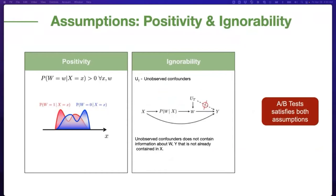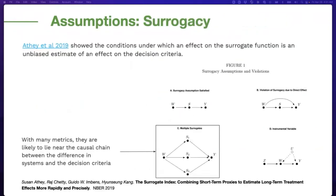The first two assumptions are positivity and ignorability. The positivity assumption states that the user must have a nonzero probability of being assigned to treatment. The ignorability assumption states that unobserved confounders do not contain information about the treatment W and outcome Y that is not already contained in X. Both these assumptions are satisfied when using A/B tests.